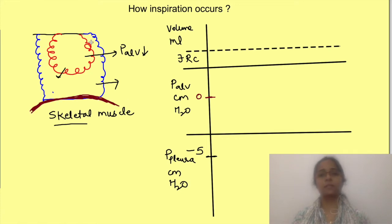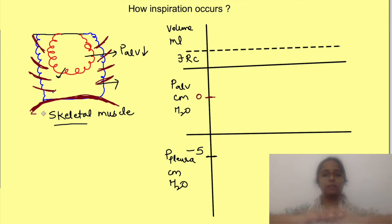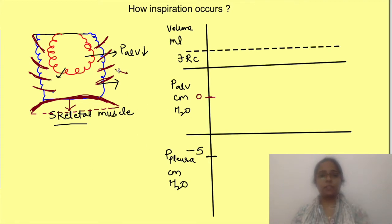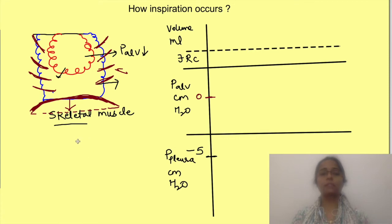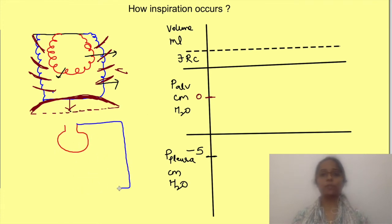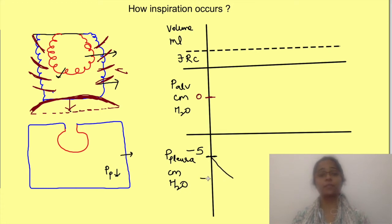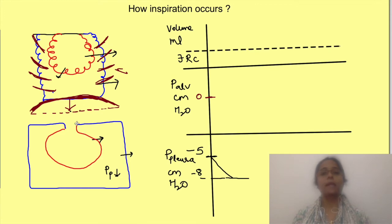This external force is provided by the contraction of skeletal muscles lining the thoracic cage. For quiet inspiration, these muscles are the diaphragm and external intercostal muscles. The diaphragm covers the bottom of the thoracic cage and flattens on contracting, increasing the vertical diameter. The external intercostal muscles are arranged from one rib to another and are hinged at the top, so when they contract they elevate the ribs, increasing the anteroposterior and transverse diameters. The thoracic cage thus expands in all three directions, causing intrapleural pressure to decrease to approximately minus 8 cm water, pulling the lungs outward and decreasing alveolar pressure.